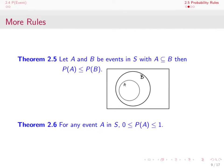Theorem 2.5 states that if we have two events A and B in S, and A is a subset of B, then the probability of A should be less than or equal to the probability of B. A Venn diagram helps see this: event A is contained entirely within B, so the probability of A is less than or equal to the probability of B.